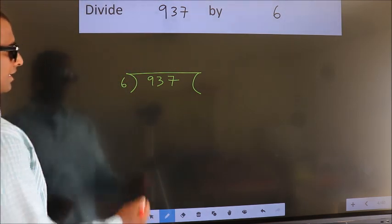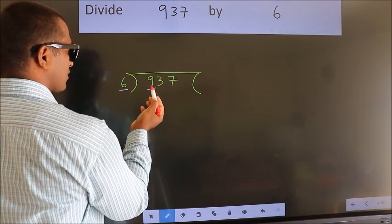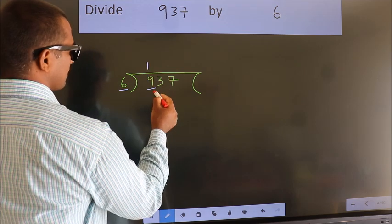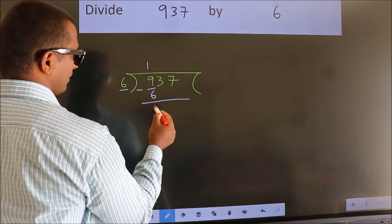Next. Here we have 9, here 6. A number close to 9 in 6 table is 6 times 1 is 6. Now we should subtract. We get 3.